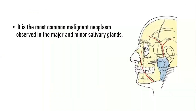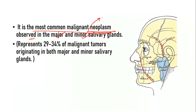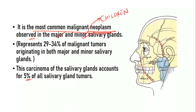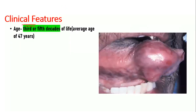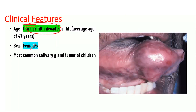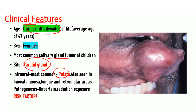Mucoepidermoid carcinoma is the most common malignant neoplasm observed in both the major and minor salivary glands. It is also the most common malignant salivary gland tumor in children. It accounts for 5% of all salivary gland tumors. Extraorally, the most common site is the parotid gland; intraorally, the most common site is the palate. Clinically, it is most commonly seen in the third to fifth decades, predominantly in females. Other intraoral sites include the buccal mucosa, tongue, and retromolar areas.